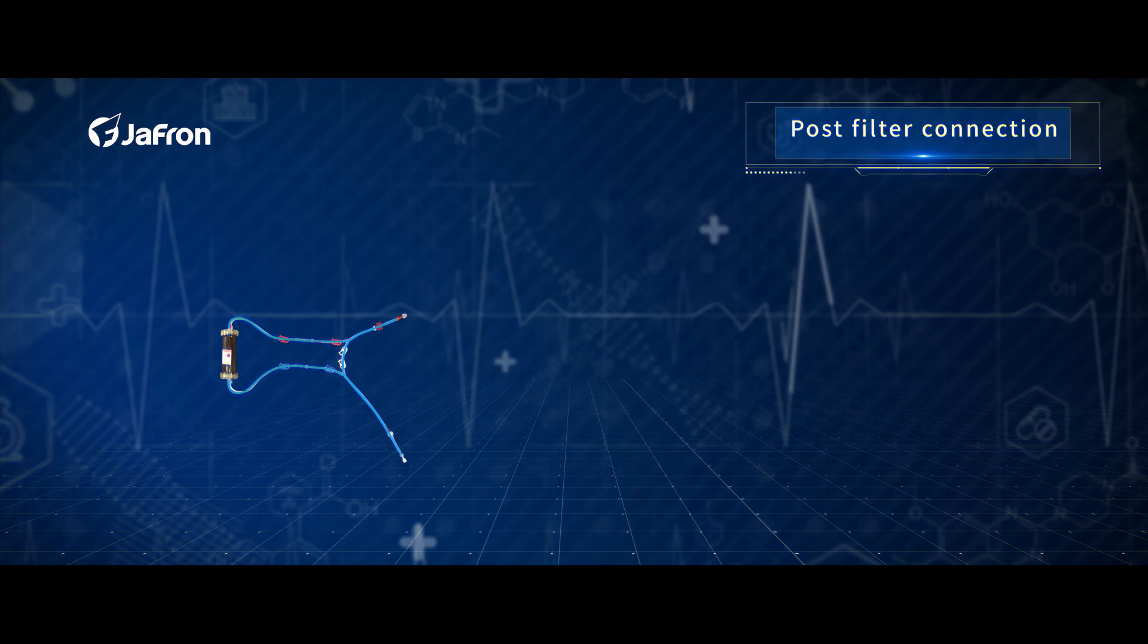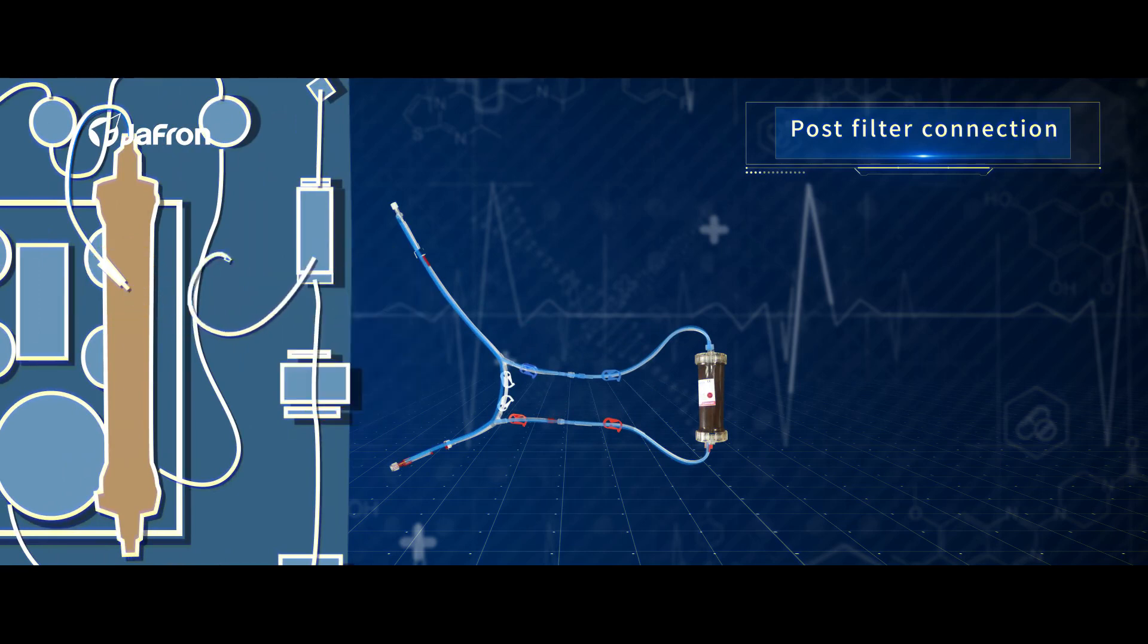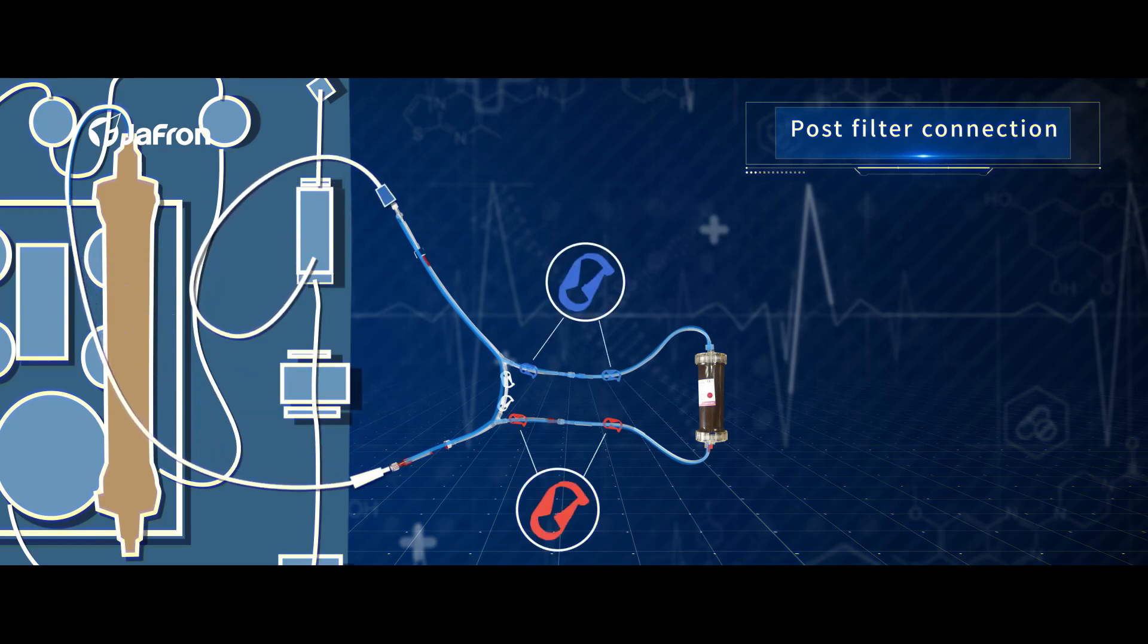Part 5: Post-filter connection. Temporarily stop CRRT treatment. Connect the blood out plus tube to the venous line. Connect the blood in plus tube to the out tube of the filter. Open the red and blue clips on the integrated line set.